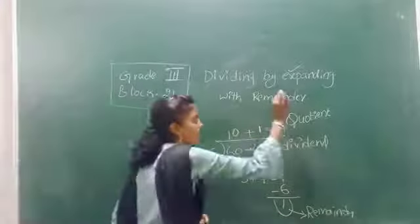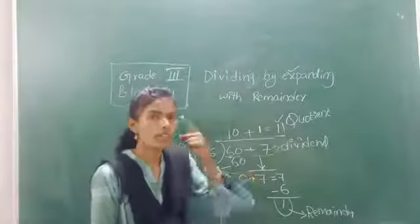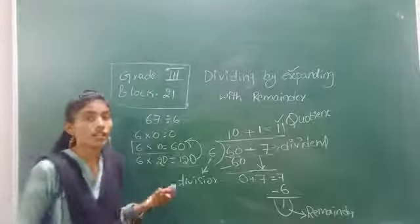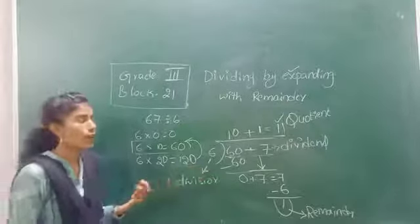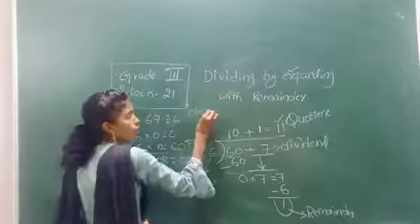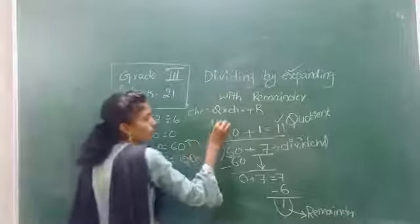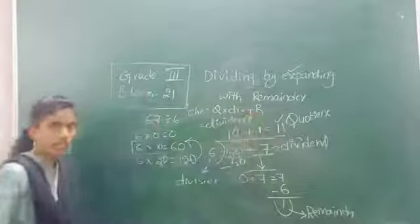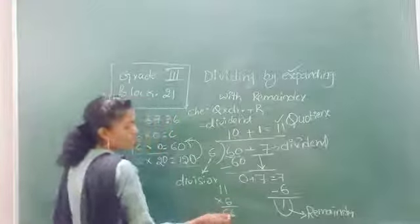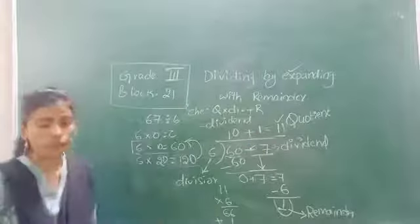Now, can you check this answer, children? Is the answer correct? We can also check our answer in division. How? Do you remember the formula? In previous classes during the long division method, I mentioned how to check division answers. So what is that? Quotient times divisor plus remainder — then you should get the dividend. So: 11 times 6 equals 66, plus the remainder. What is the remainder? 66 plus 1 is 67. Did you get the dividend, children? Yes! So this is the way you check your answer.